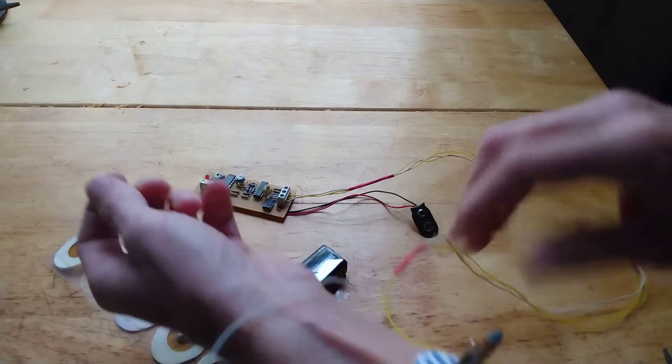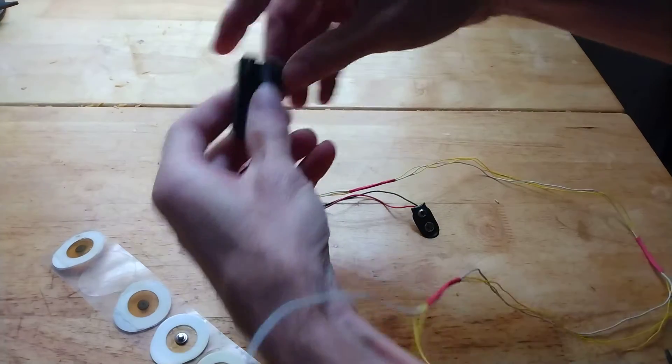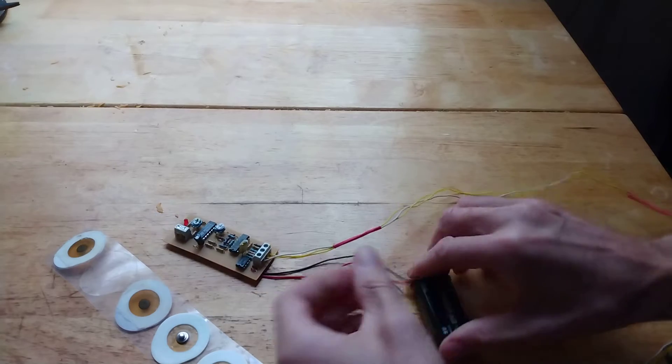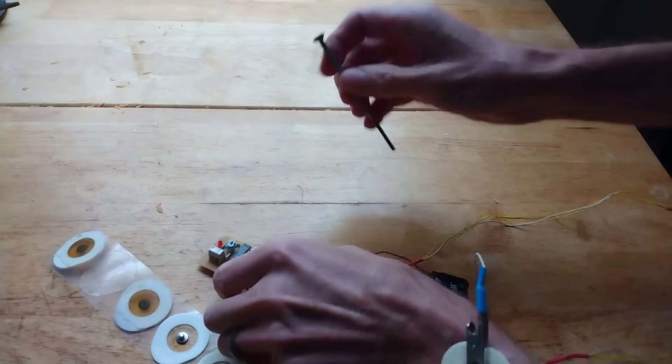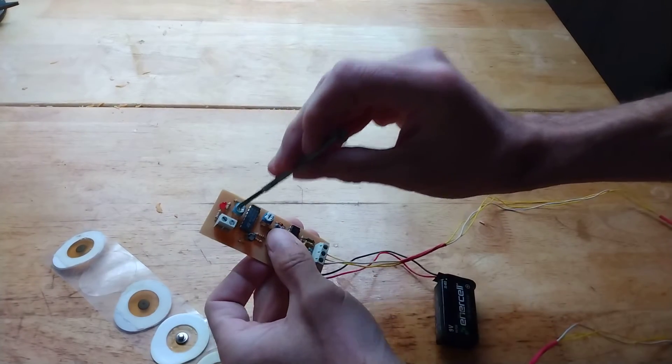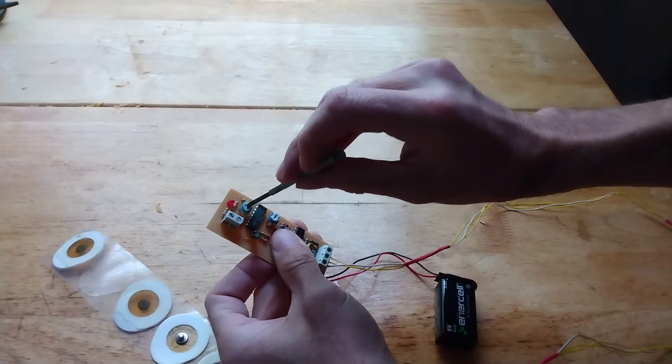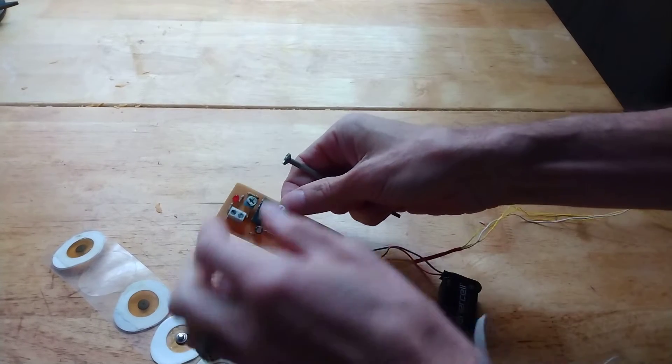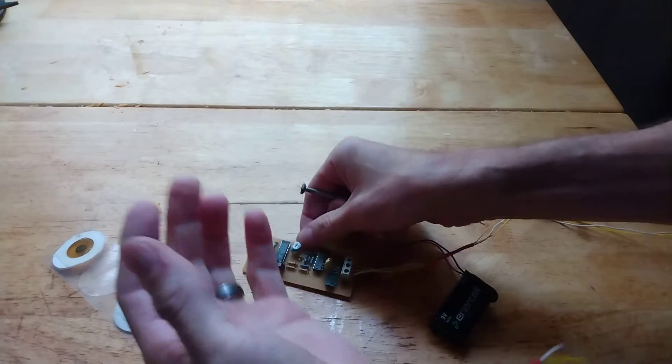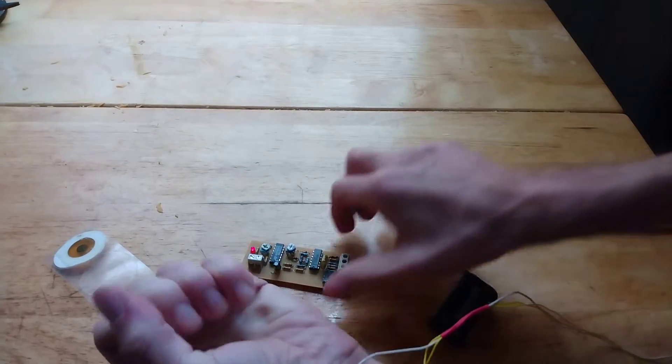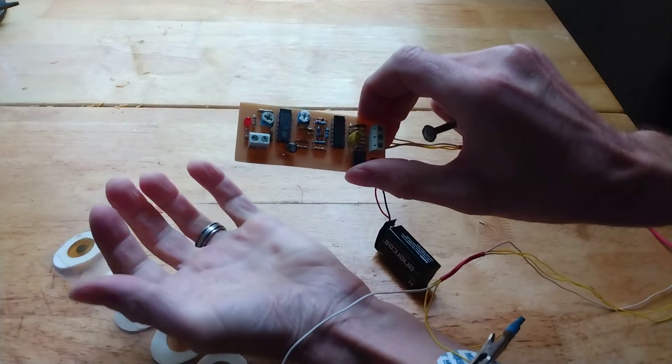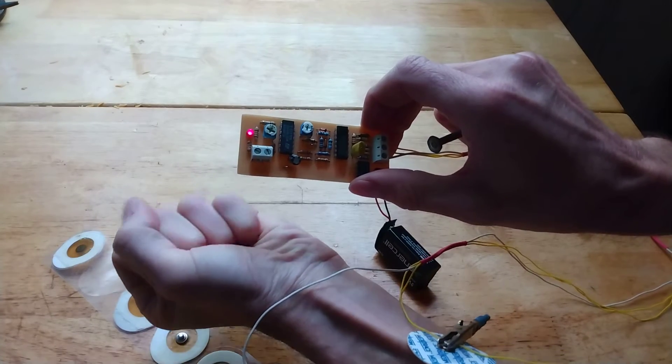Now let's turn on the circuit. So here with this adjustable resistance I can adjust the offset of the output signal. So if I contract my hand, you see now the LED turns on. Okay, so the circuit works.